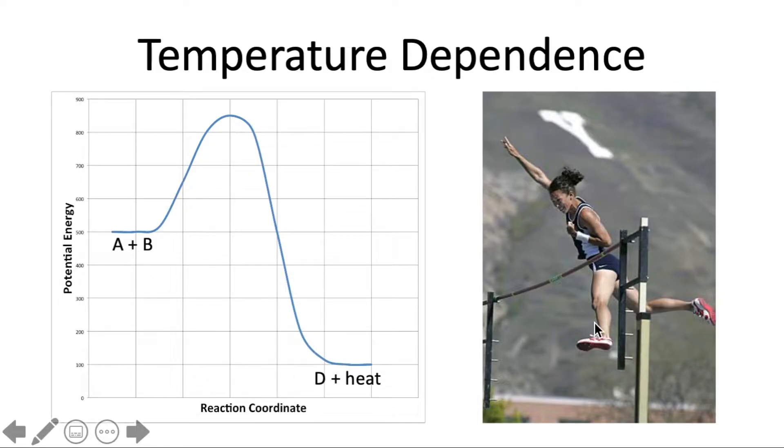If we think of this like the high jump that's kind of like the reverse reaction. Normal people can't jump over that huge high bar, right? But normal people, probably a bunch of them, not all of them but many of them can jump over say a hurdle. And so that's like our forward reaction, it's easier to jump over that activation energy.